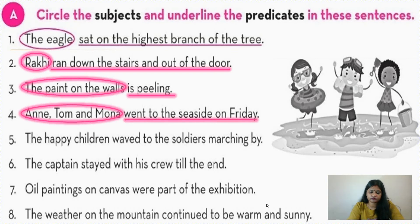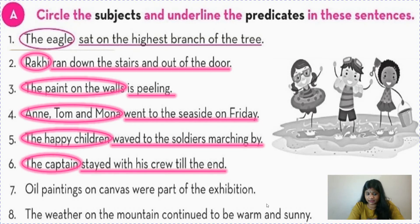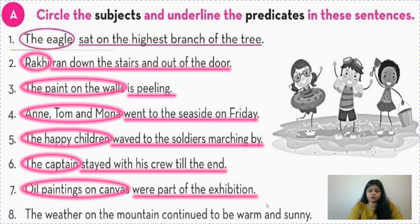'Amy, Tom and Mona went to the seaside on Friday' — we are talking about 'Amy, Tom and Mona,' so that is the subject. 'The happy children waved to the soldiers marching by' — subject is 'the happy children.' 'The captain stayed with his crew till the end' — subject is 'the captain.' 'Oil paintings on canvas were part of the exhibition' — the subject is 'oil paintings on canvas.' 'The weather on the mountain continued to be warm and sunny' — subject is 'the weather on the mountain,' not just 'the weather.'